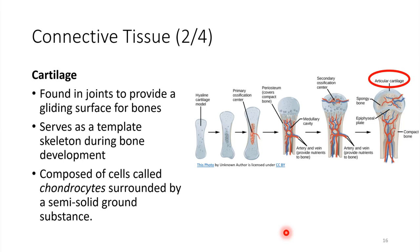Cartilage is found in joints. It provides a really good gliding surface. Interestingly, it also provides a template for bone formation. Initially, our skeletons are made of cartilage when we're babies. Then as the baby develops, it ends up developing into bone.